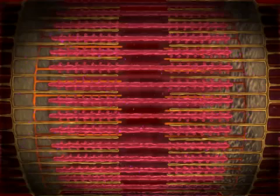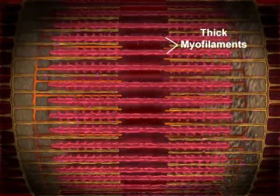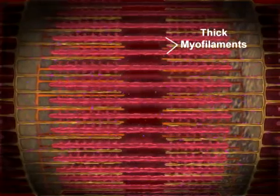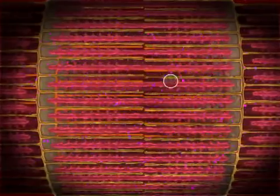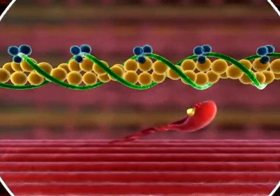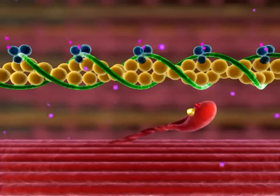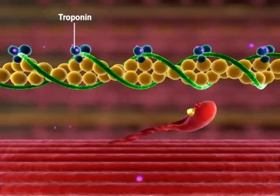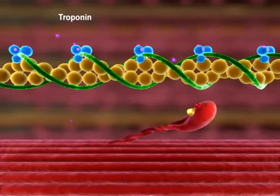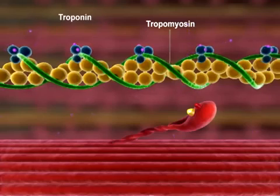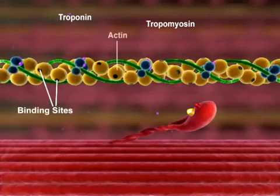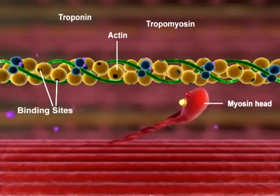A sarcomere shortens when myosin heads in thick myofilaments form crossbridges with actin molecules in thin myofilaments. The formation of a crossbridge is initiated when calcium ions, released from the sarcoplasmic reticulum, bind to troponin. This binding causes troponin to change shape, and tropomyosin moves away from the myosin binding sites on actin, allowing the myosin head to bind actin and form a crossbridge.